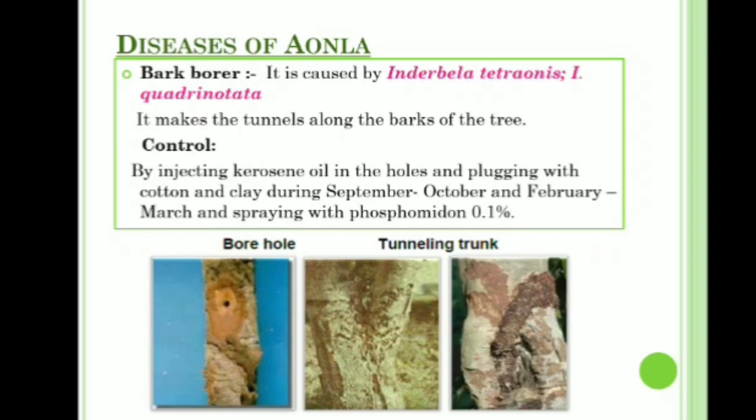Bark borer is caused by Indarbela tetraonis and Indarbela quadrinotata. It makes tunnels along the bark. Control: inject kerosene oil in the holes and plug with cotton and clay during September to October and February to March, and spray with Phosphomidon 0.1 percent.